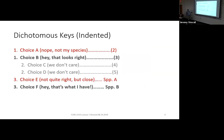Here's how a dichotomous key works. You have two choices — choice A and choice B. Choice A doesn't look like what you have, so you go to choice B, which looks like what you have, and it tells you where to go next — say, go to step three. So we skip step two; step two is about other specimens. We go to step three.